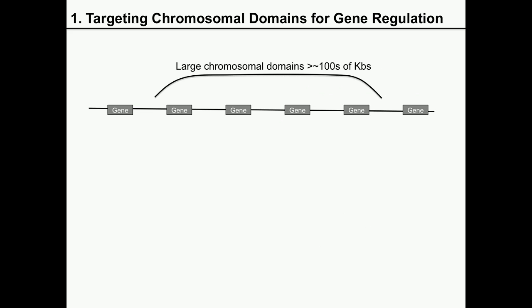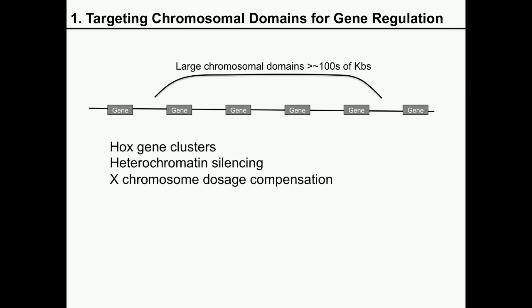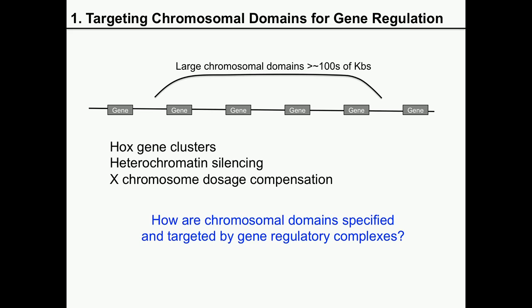In eukaryotic organisms, multiple genes within a large chromosomal domain can be coordinately regulated. Such regulation examples include the Hox gene clusters, heterochromatin silencing, and X-chromosome dosage compensation. While these processes are essential for animal development, we still don't understand clearly how these chromosomal domains are specified and targeted by gene regulatory complexes.